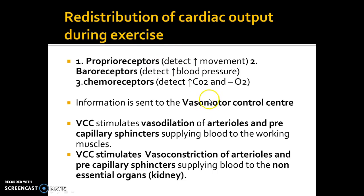So how does this happen? When the vasomotor control center receives this information, it stimulates vasodilation of the arterioles and precapillary sphincters which supply blood to the working muscles. Vasodilation means widening — just as pupils dilating means they are getting bigger. Because you're exercising, the arterioles and precapillary sphincters supplying the working muscles need to open wider, which means more blood can travel to those working muscles.